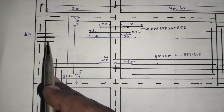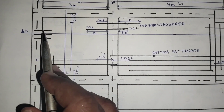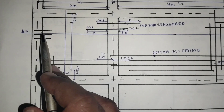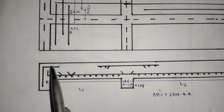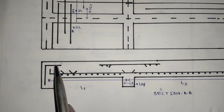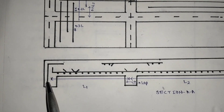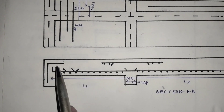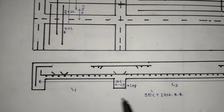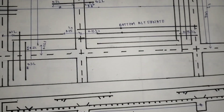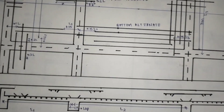Here this is the end of the slab. In this portion we have to take it as 0.1 into L from this point, and then add the development length. I will explain further how to calculate the cutting length of each bar — keep watching.